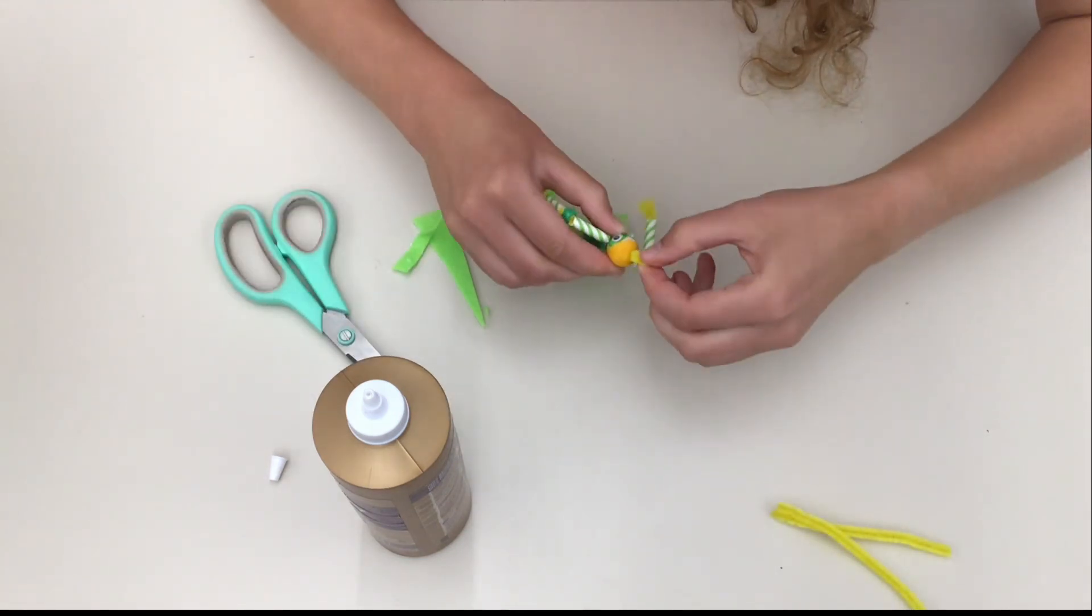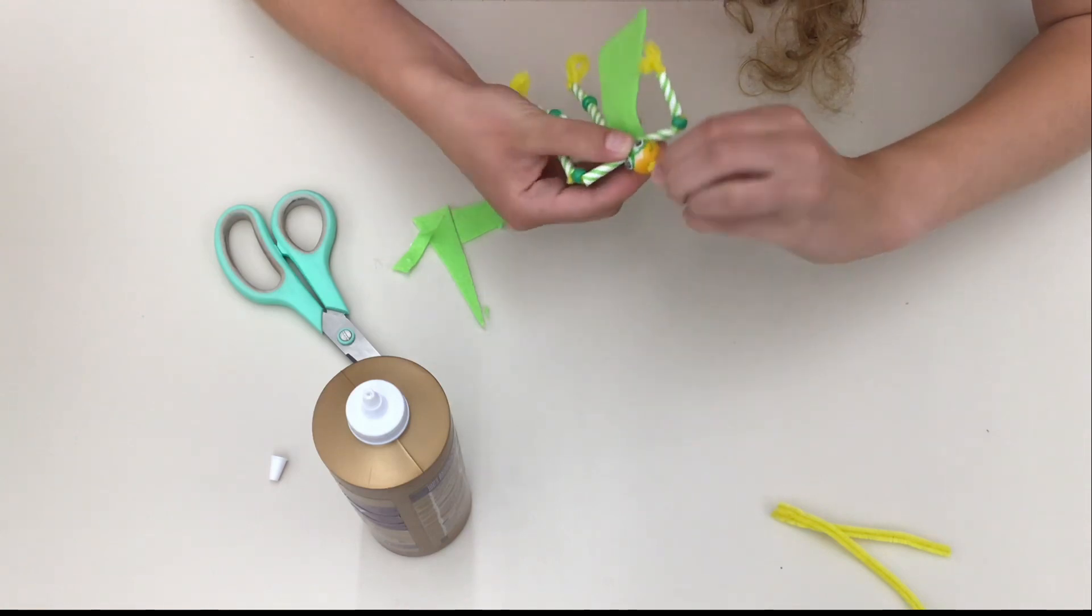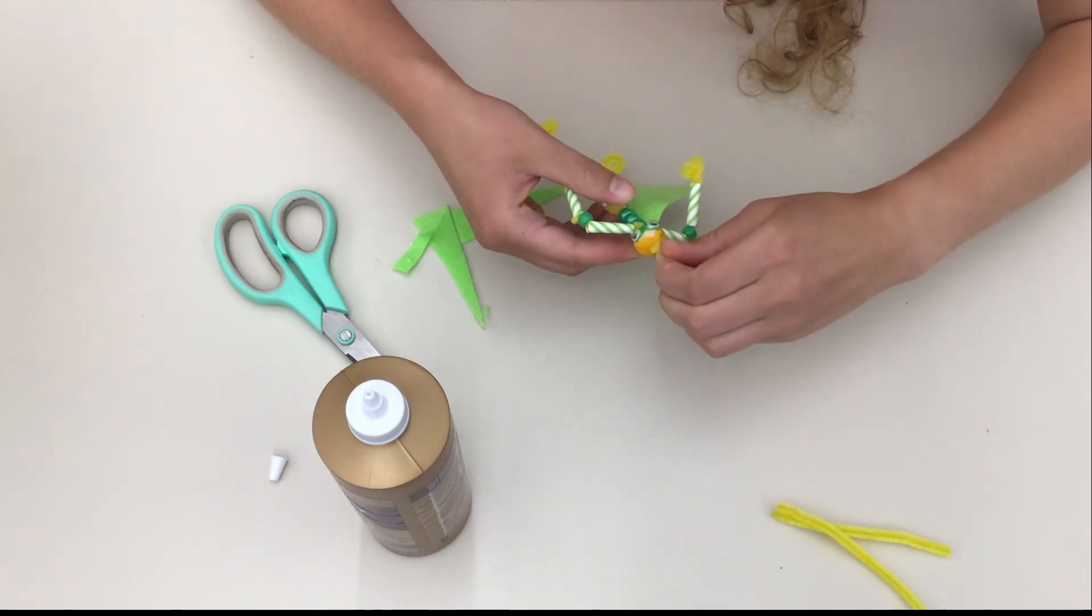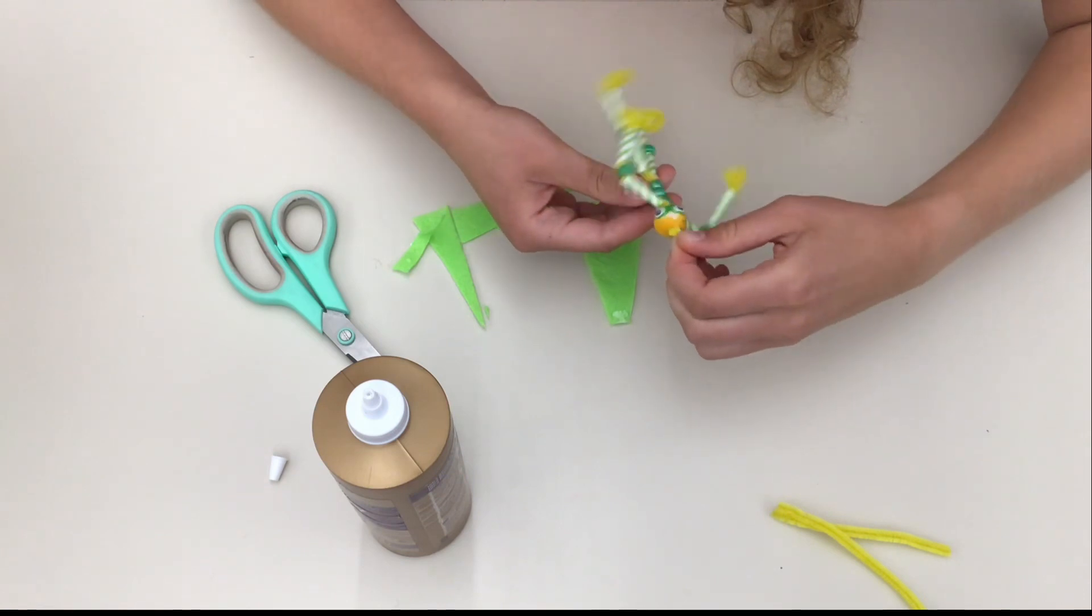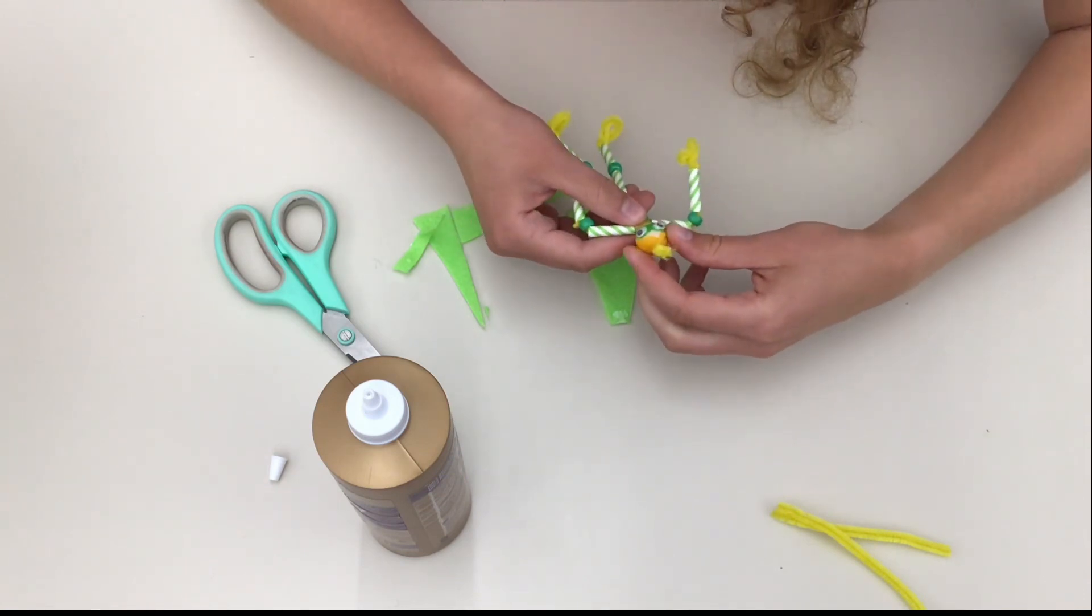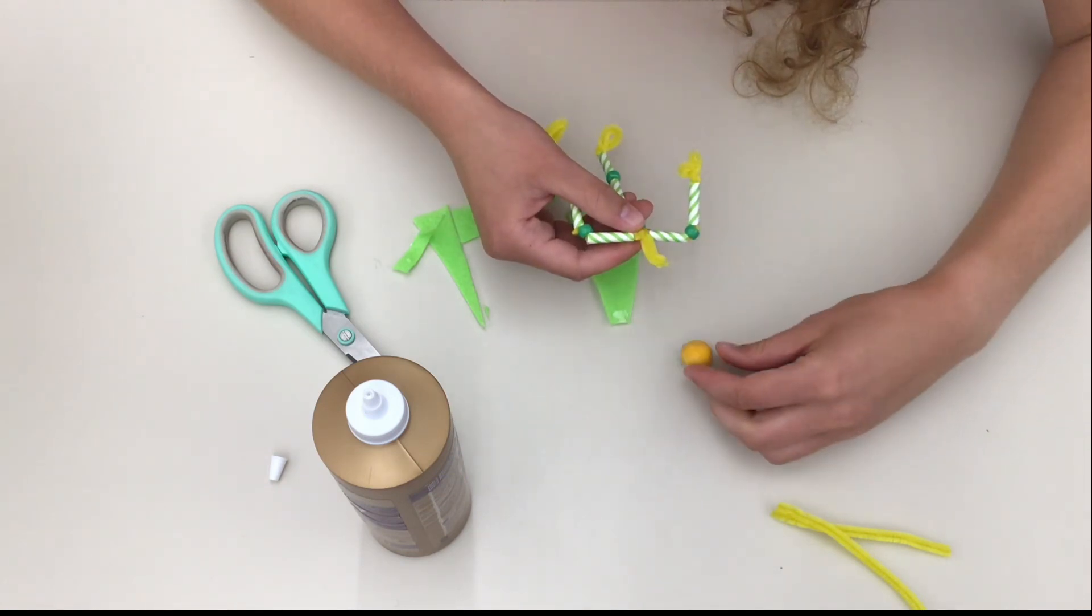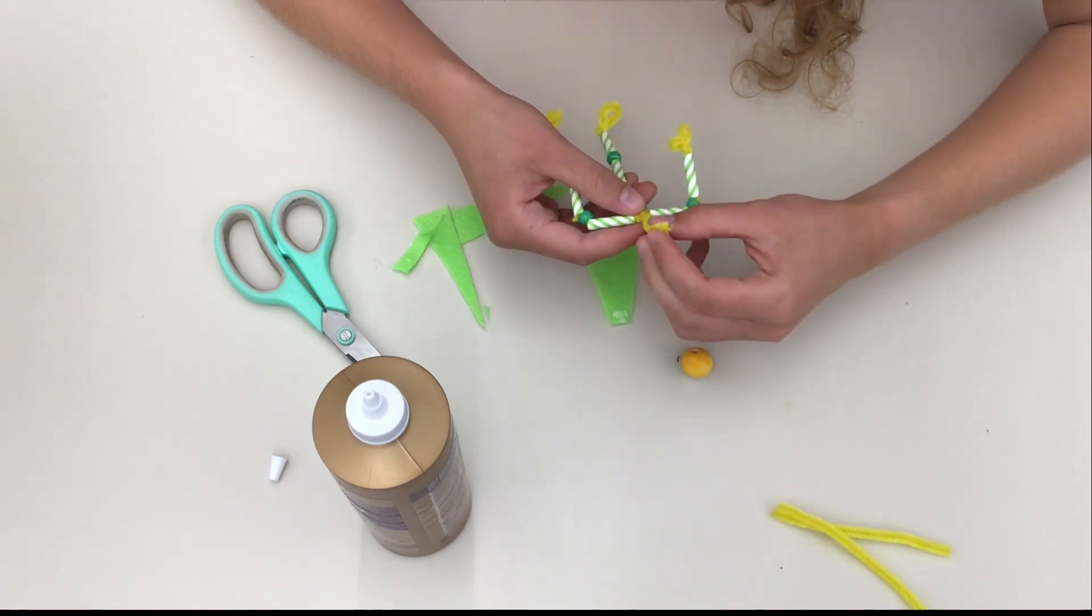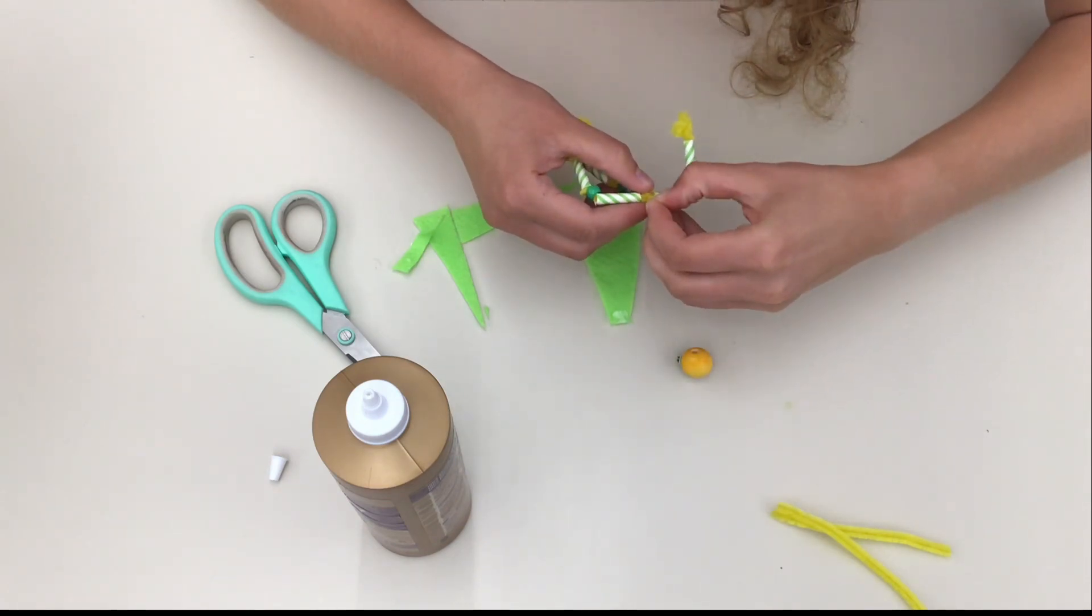Twist the two ends together and then slide the head off. Now you can bend the pipe cleaner over, and that's where you're going to attach the wooden head.